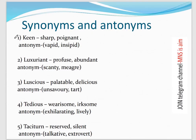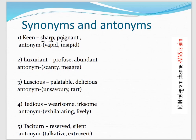Now for synonyms and antonyms in a batch format for easier learning. First word: 'Keen' — its synonyms are sharp, poignant, intelligent. Its antonym is 'vapid' or 'insipid,' which means weak or flavorless.